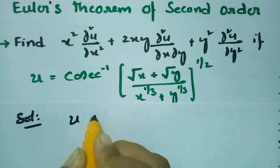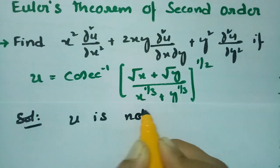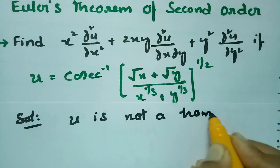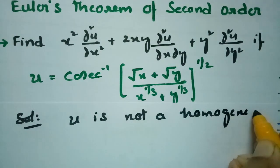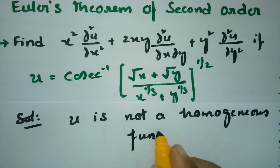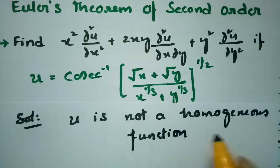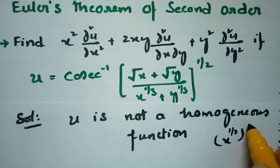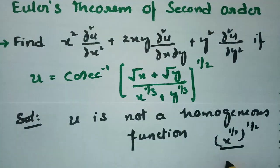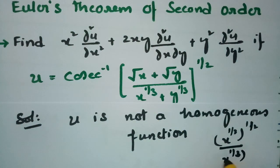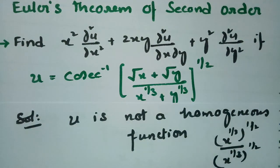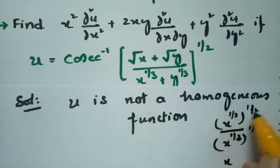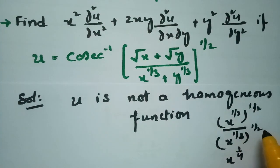u is not a homogeneous function. As it is not a homogeneous function, let us find the degree. If you consider √x, that is x to the power of half. And x^(1/3) to the power 1/2 is 1/3 × 1/2 = 1/6. For √x in the numerator, the power is 1/2 × 1/2 = 1/4. So the powers involved are 1/4 and 1/6.